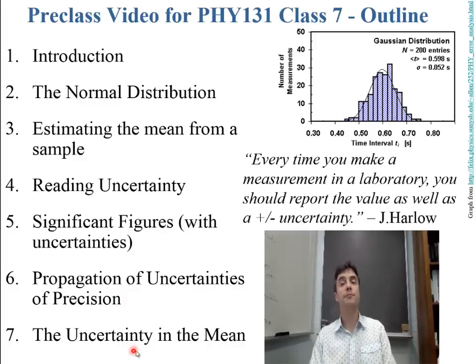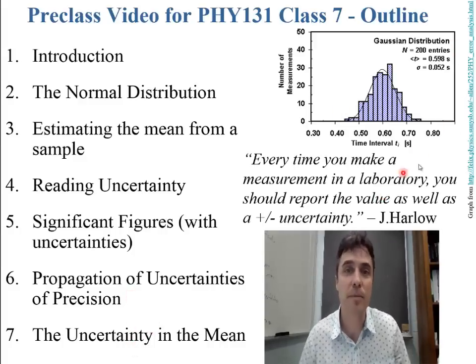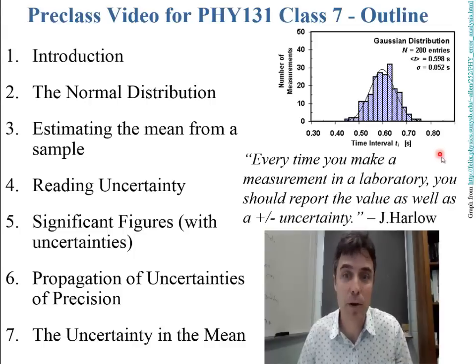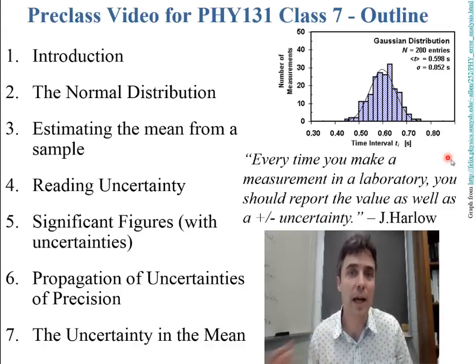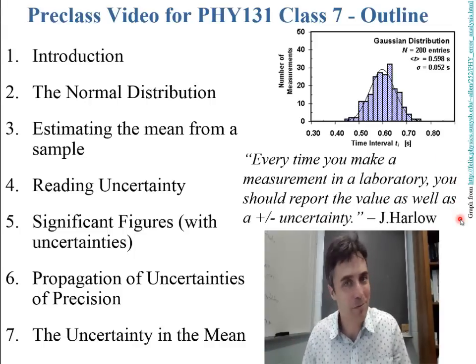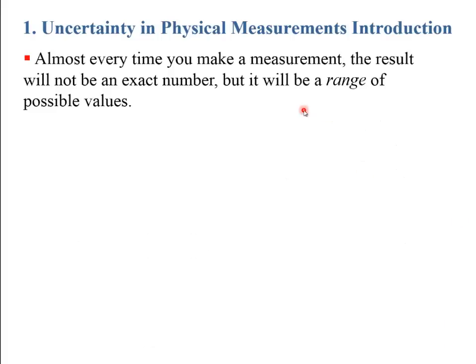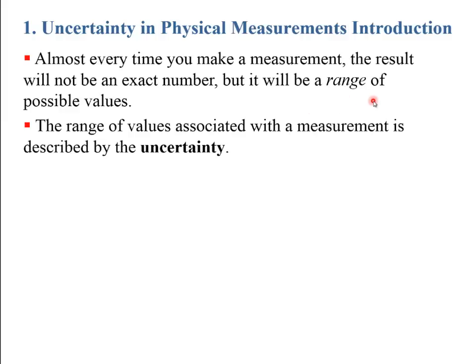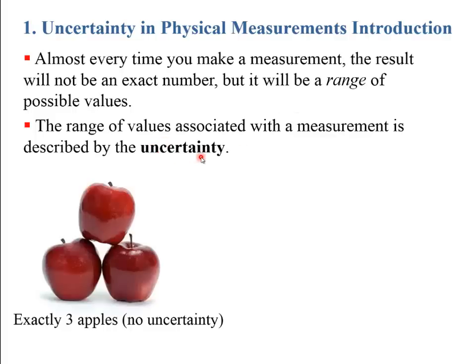The quote above is that every time you make a measurement in a laboratory, you should report the value as well as the uncertainty in that value. Almost every time you make a measurement, the result will not be an exact number, but actually a range of possible values, and you describe this range with what's called the uncertainty.